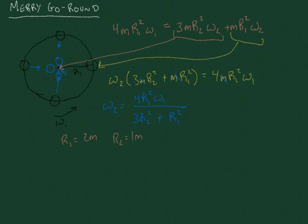So then in this case, we would say that Omega-2 is equal to 4 times 4, so 16 Omega-1 over 3 plus 4. So 3 plus 4, this would be 16 over 7 Omega-1. So we see that Omega-2 is greater than twice Omega-1, so it's sped up by more than twice as fast.